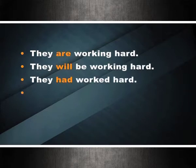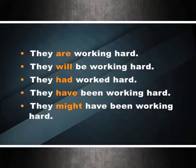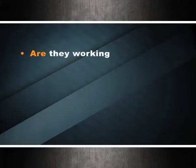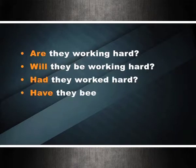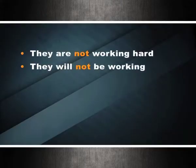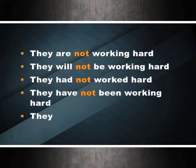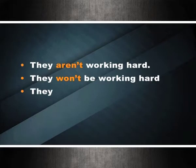Verbs — questions and negatives. Yes/no questions are questions to which the answer is yes or no. We form them by putting the subject after the first part of the verb: are they working hard? Will they be working hard? Had they worked hard? Have they been working hard? Might they have been working hard? We make negatives by putting 'not' after the first part of the verb: they are not working hard; they will not be working hard; they had not worked hard; they might not have been working hard. In spoken English, 'not' is often reduced to 'n't': they aren't working hard; they won't be working hard; they hadn't been working hard.